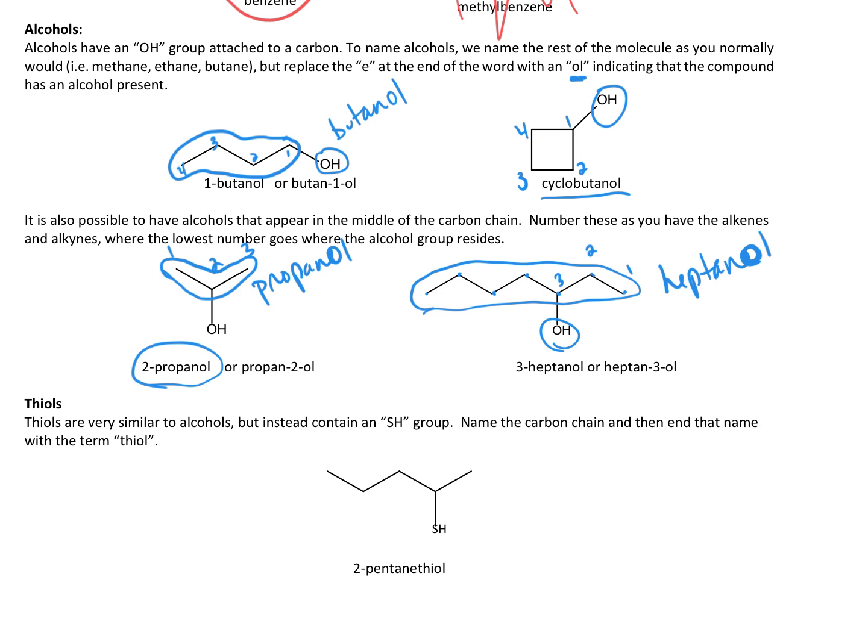In a very similar manner, we can name thiols. Remember, SH is a thiol, and that's very similar to OH. The only difference is we don't take off the E, and we add the term thiol. Let's look at the longest chain. We've got 1, 2, 3, 4, 5. That would be pentane. Since there's an SH attached, we end up with that being pentanethiol. And then give it the lowest possible number. So that would be 2-pentanethiol.